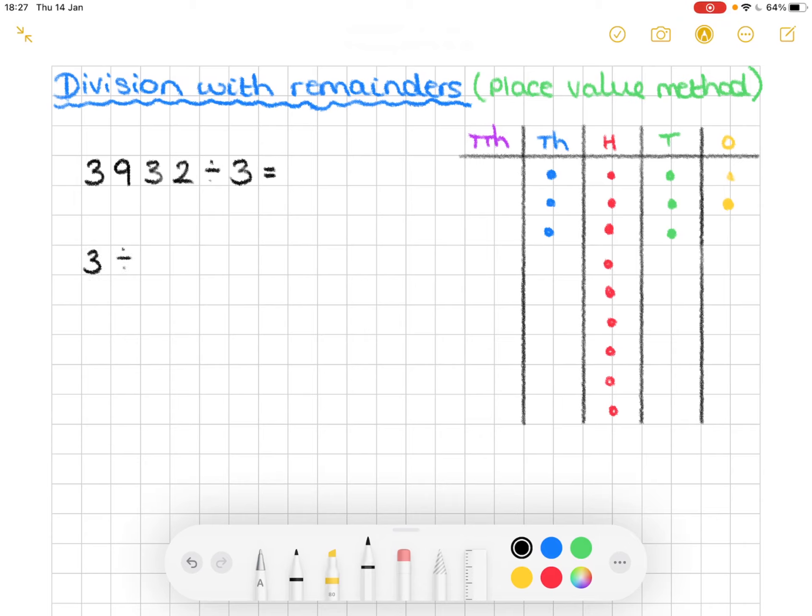So three divided by three makes one. That means that there needs to be one counter or dot in each group. So I'll just split that off there. So we've got three equal groups of one.